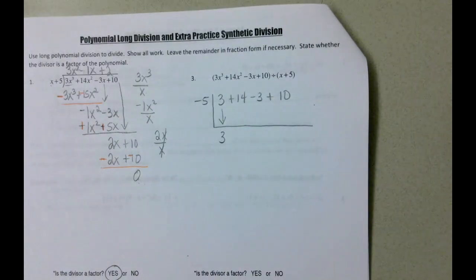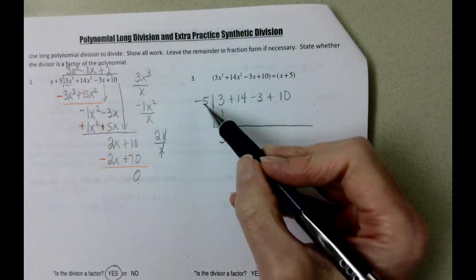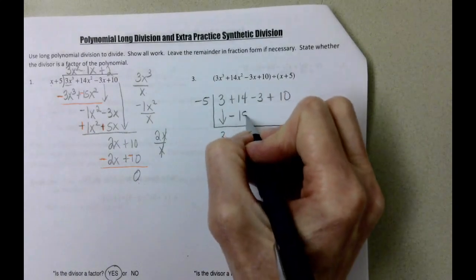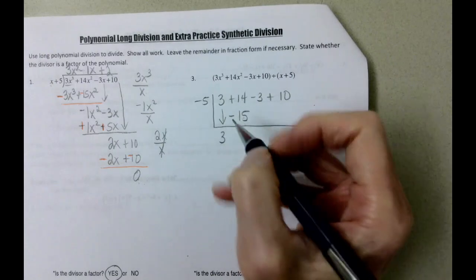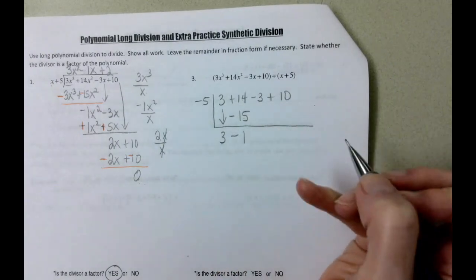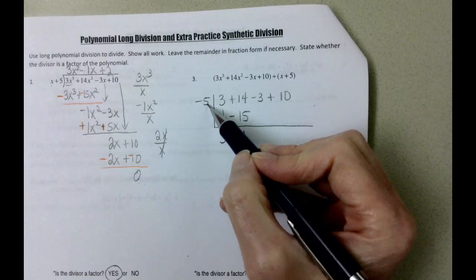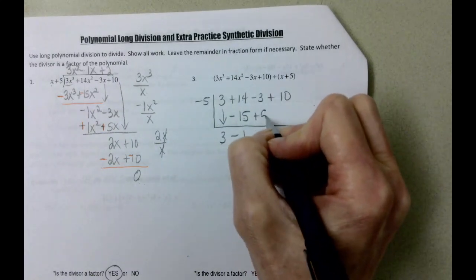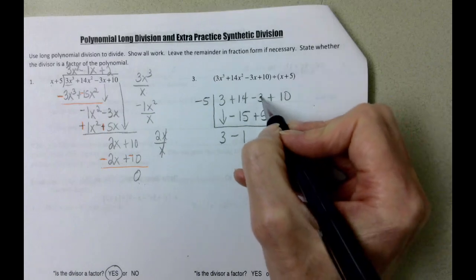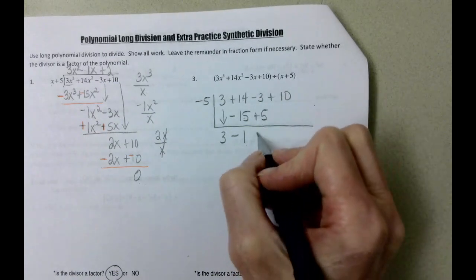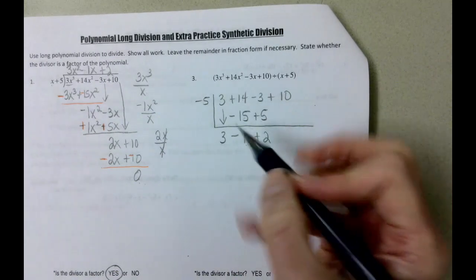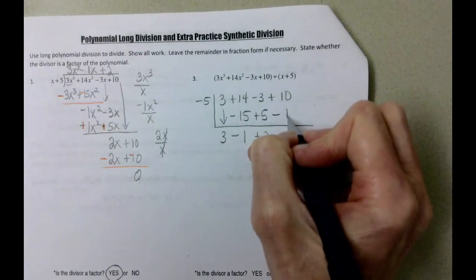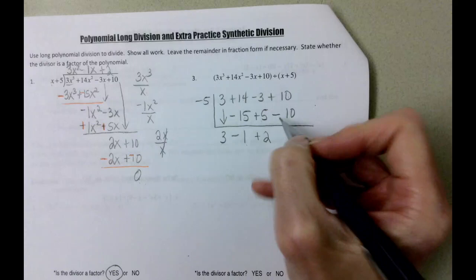And we're going to carry down that 3. Negative 5 times 3 is negative 15. 14 minus 15 is negative 1. Negative 5 times negative 1 is positive 5. Negative 3 plus 5 is 2. Negative 5 times 2 is negative 10, and 10 minus 10 is 0.